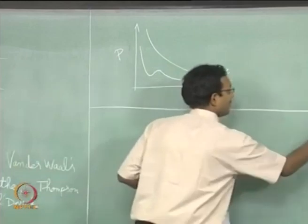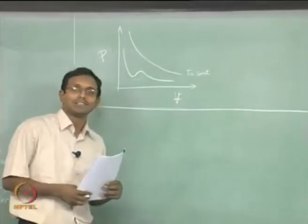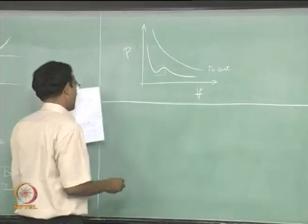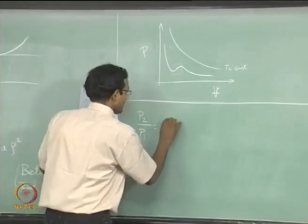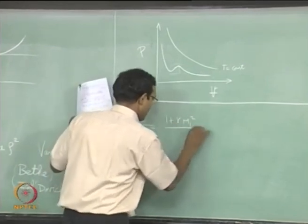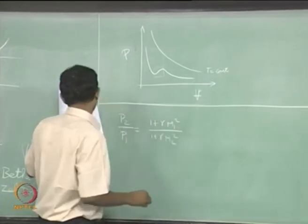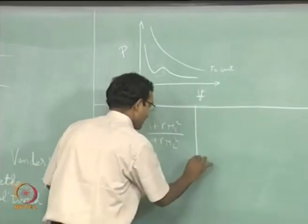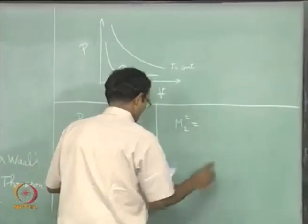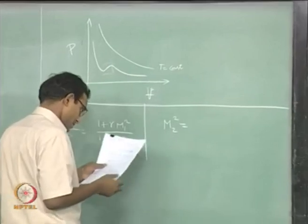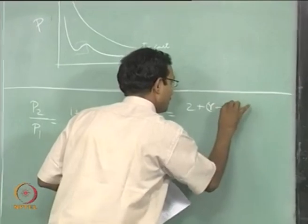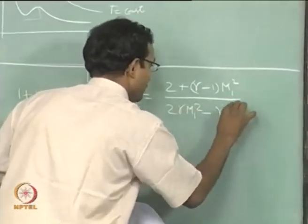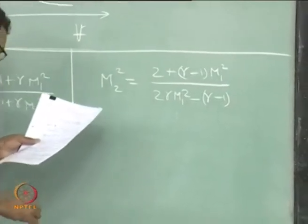Now I will derive every ratio variable in terms of M1 alone. We had P2/P1 = (1 + γM1²) / (1 + γM2²). I will substitute M2², which we derived last class: M2² = (2 + (γ−1)M1²) / (2γM1² − (γ−1)).